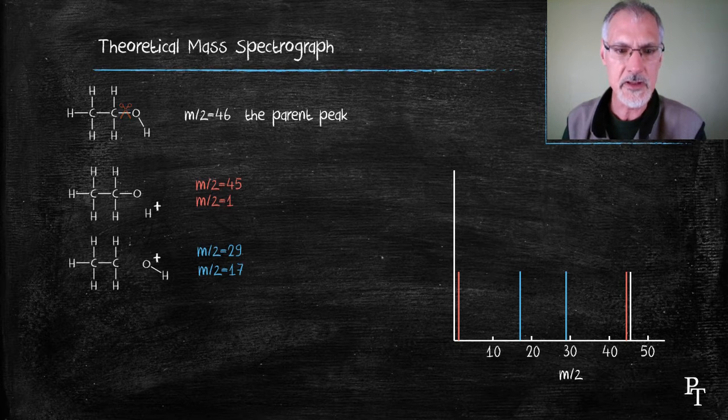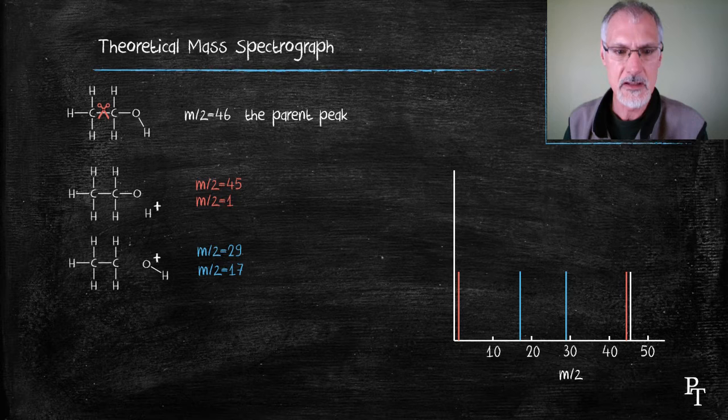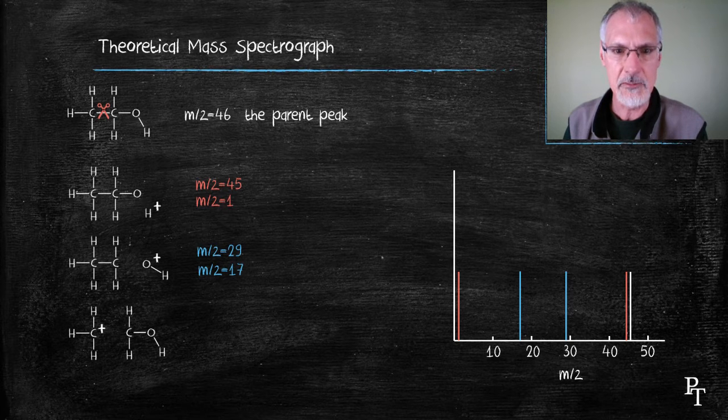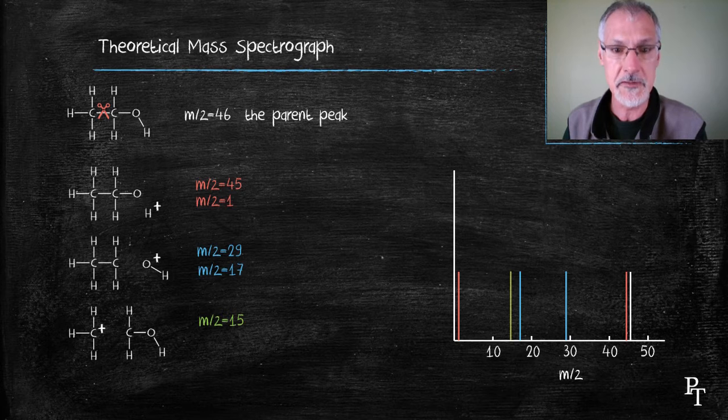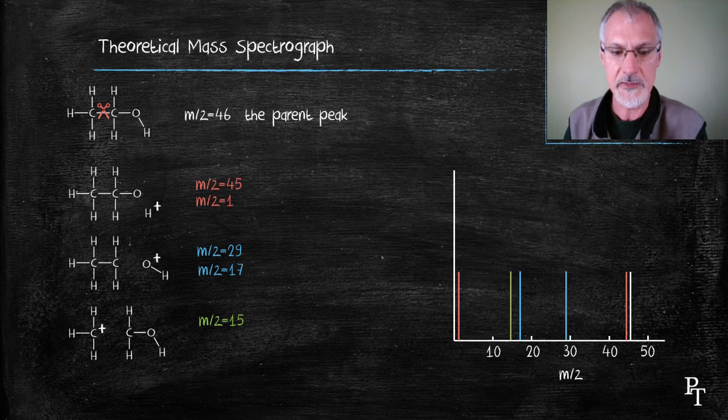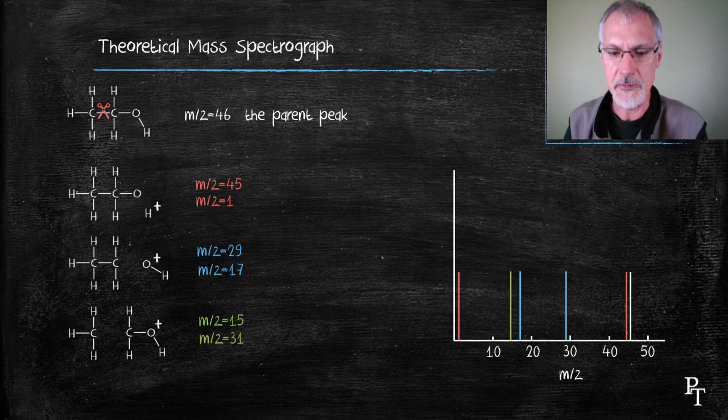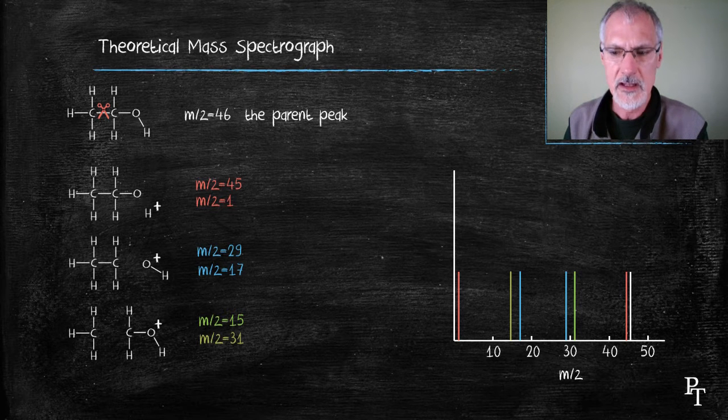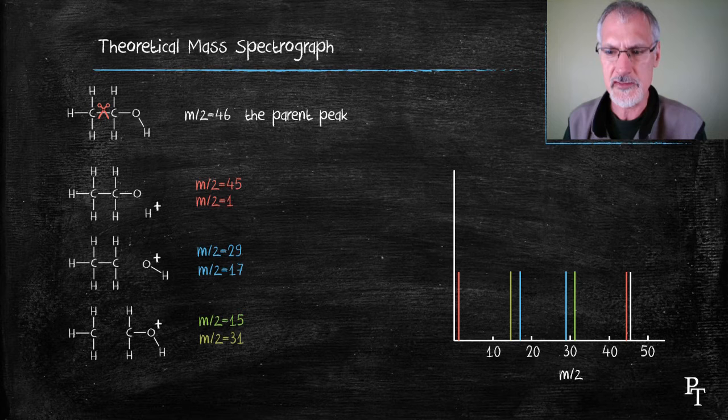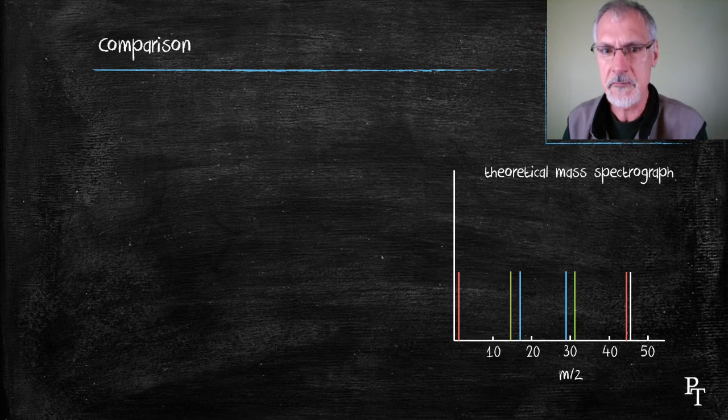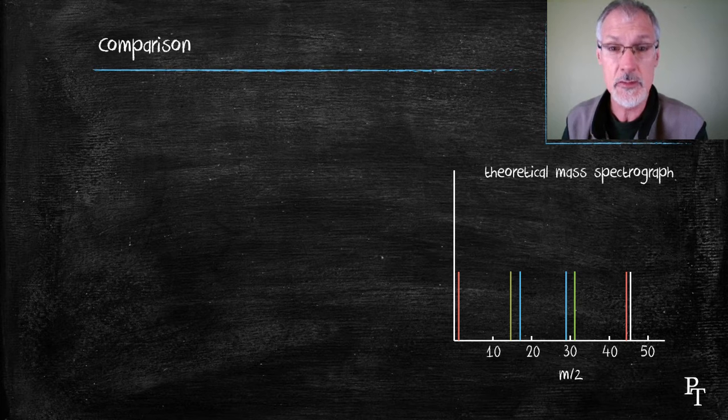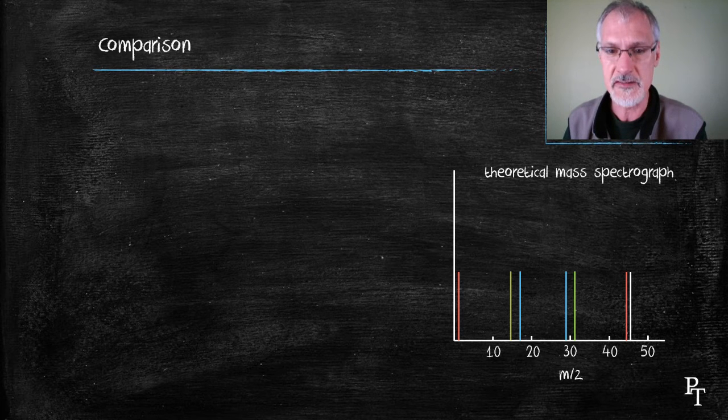And finally, if it broke at this location. On the left-hand side, I would have a CH3 group, and that would give me a mass over charge ratio of 15. And if the positive charge resided with the other fragment, I would have a peak at 31. So that represents my theoretical distribution. At this point, I have no idea as to which one will be favored over which one. So I'm going to assume an approximate equal abundance of each isotope.